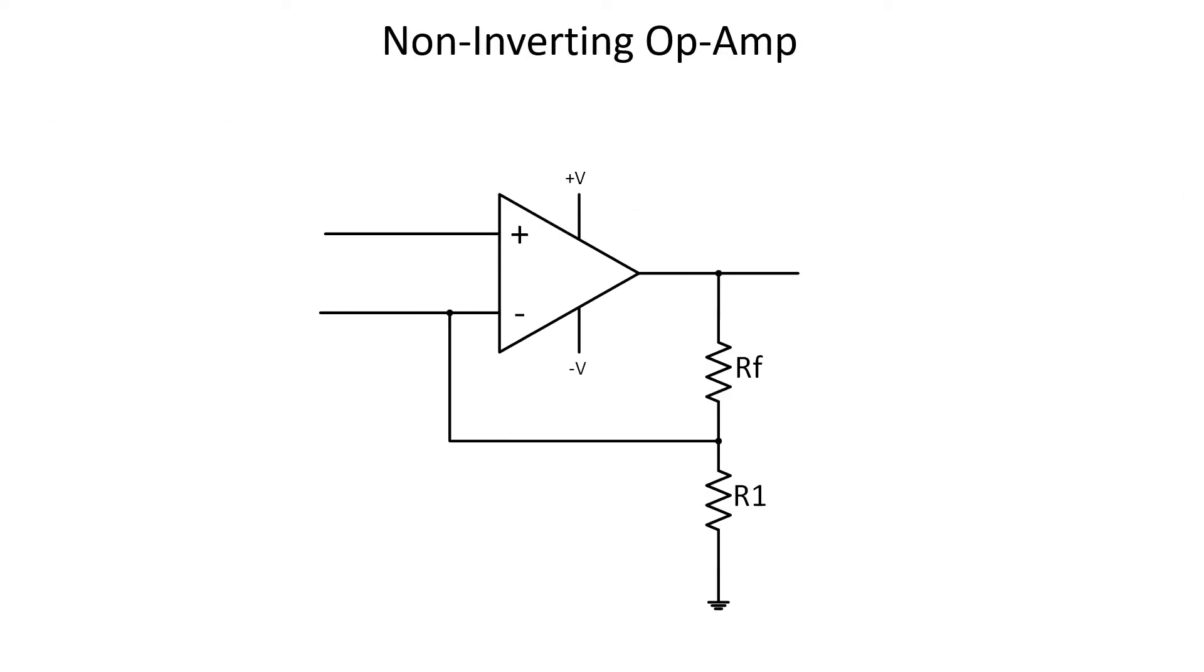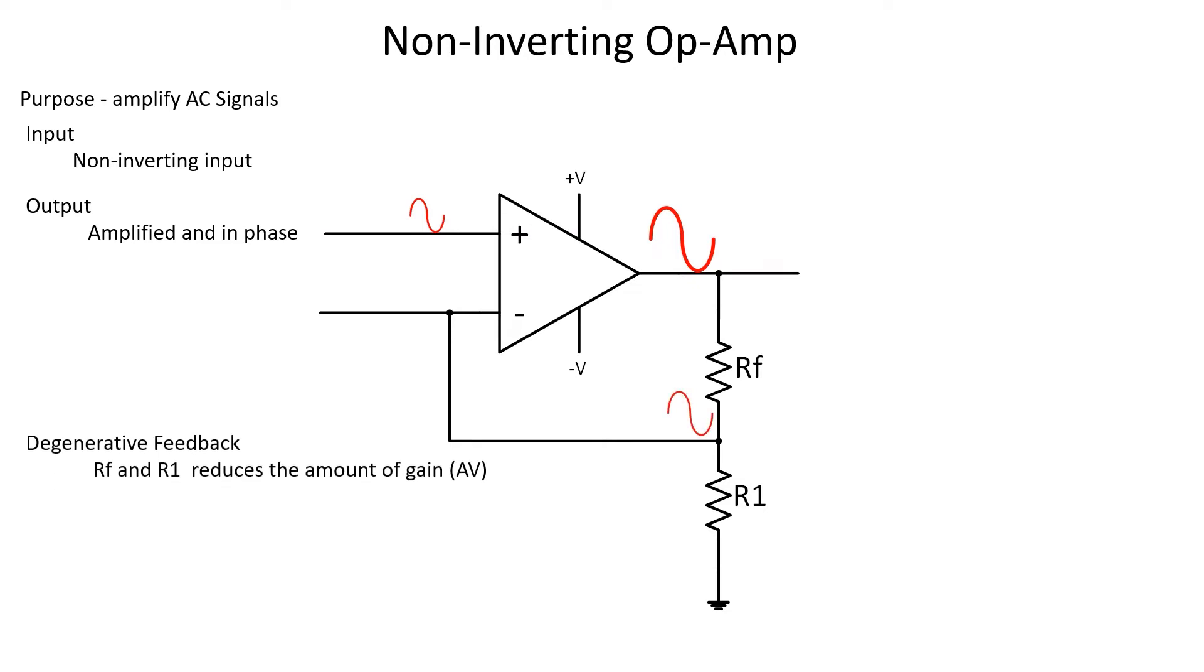Now let's talk about the non-inverting op amp. The purpose is to amplify AC signals. The input is on the non-inverting input, and the output is amplified and in phase with the input because it was not inverted. Pro tip, when dealing with these op amps, the job is in the name. Op amps use the principle of degenerative feedback, as shown, to reduce the amount of gain, otherwise the circuit could be damaged.